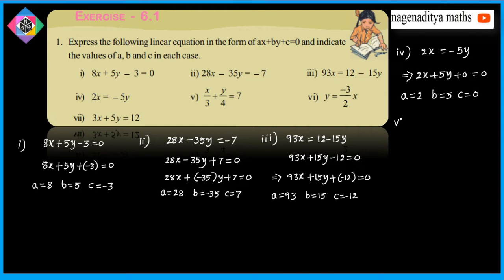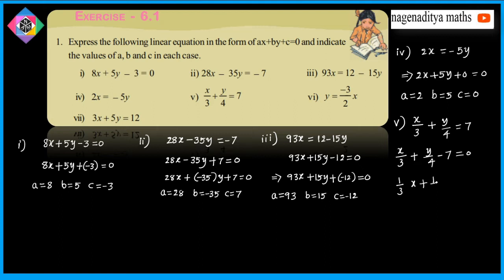Fifth problem: x by 3 plus y by 4 is equal to 7. Moving 7 to the left hand side gives x by 3 plus y by 4 minus 7 is equal to 0, which is 1 by 3 times x plus 1 by 4 times y plus (minus 7) equals 0. Comparing, A is equal to 1 by 3, B is equal to 1 by 4, and C is equal to minus 7.